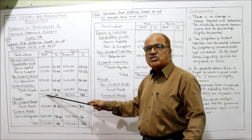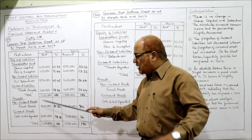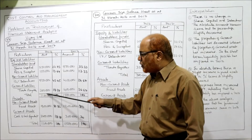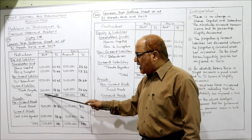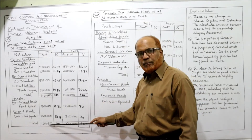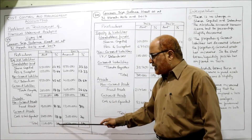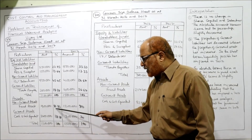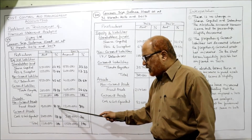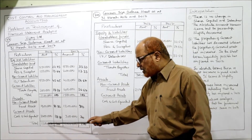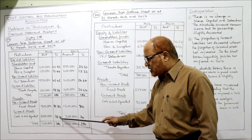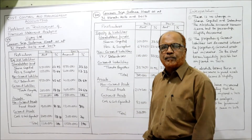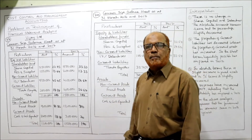The same case applies for assets. The total of assets will also be taken as base because both are the same — assets and liabilities totals are equal. So here the base is 100: 9 lakh divided by 11 lakh into 100 = 81.82%; 2 lakh divided by 11 lakh into 100 = 18.18%. Total is 100. That's all — this is the common size balance sheet for 2016.